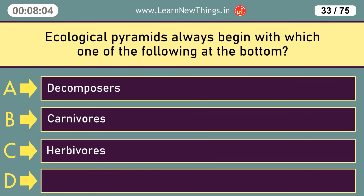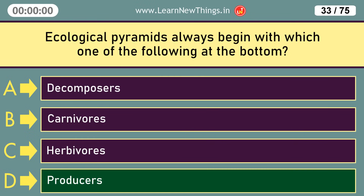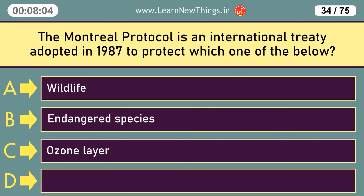Ecological Pyramids always begin with which one of the following at the bottom? Producers. The Montreal Protocol is an international treaty adopted in 1987 to protect which one of the below? The Ozone Layer.